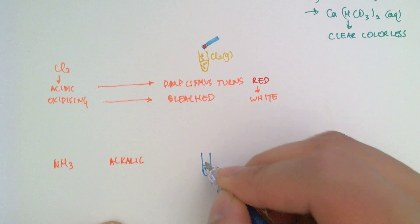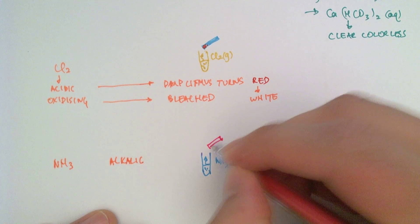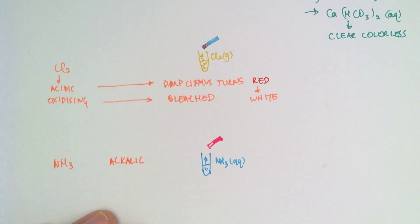So what we'll see is it's going to turn your red litmus blue. So if you have ammonia liberated here and if you put some red litmus paper at the top of the test tube, it's going to turn blue.